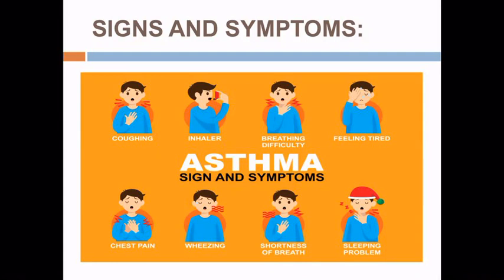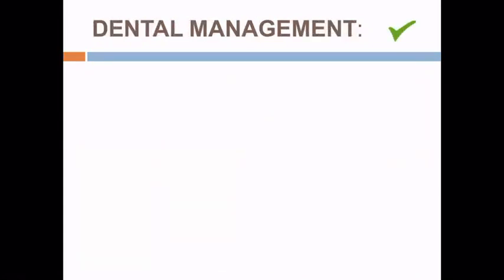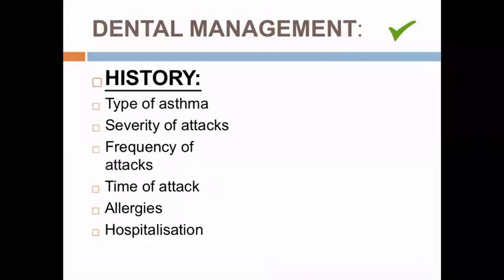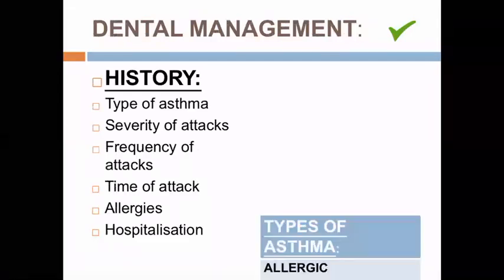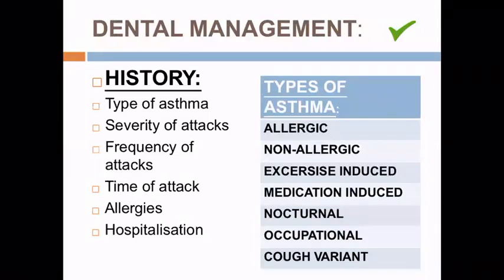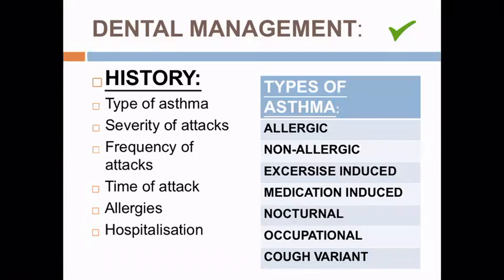Next, we come to the dental management of a patient who tells us that he is asthmatic. In such patients, we first record the history, which includes type of asthma. It can either be allergic, non-allergic, exercise-induced, medication-induced, nocturnal, occupational, or cough variant. Next, we will be asking about the severity and frequency of attacks, and also the time of attack. You also have to ask the patient if he is allergic to any of the drugs, and lastly, if any hospitalization was done in the recent past.